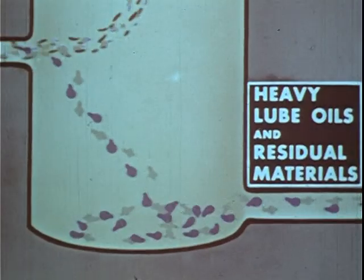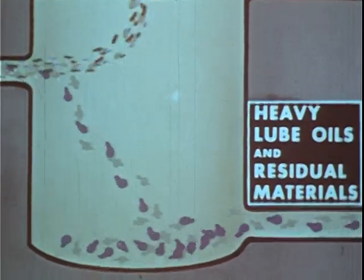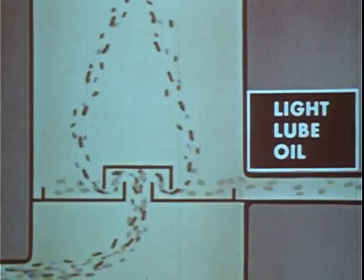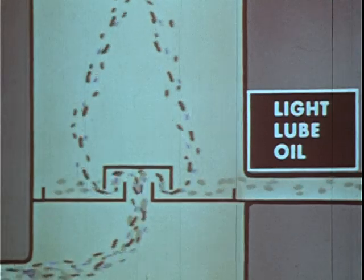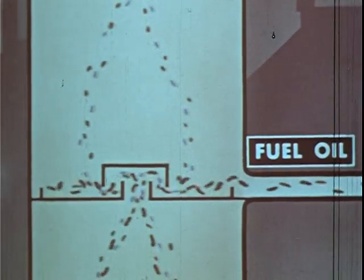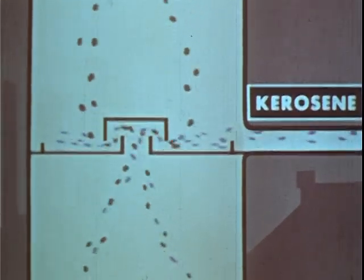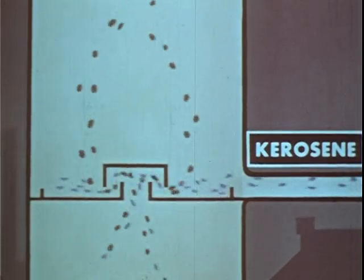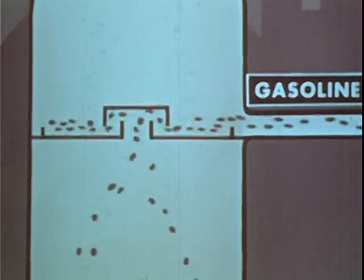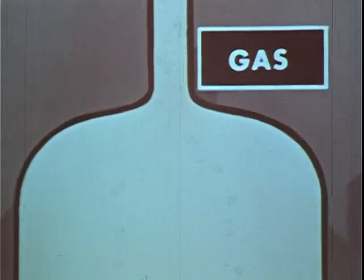Here we see the crude oil being heated. Most of it is vaporized. At the bottom of the bubble tower, unvaporized large molecules of heavy lube oil and residual materials are drawn off. At the second level, the light lube oil is condensed out of the vapor and withdrawn. At the third level, the largest of the lighter remaining molecules condense to form the fuel oil cut. At the fourth level, kerosene is condensed and drawn off. At the fifth level, the gasoline molecules become liquid, leaving the very light gas molecules to go out the top of the bubble tower.